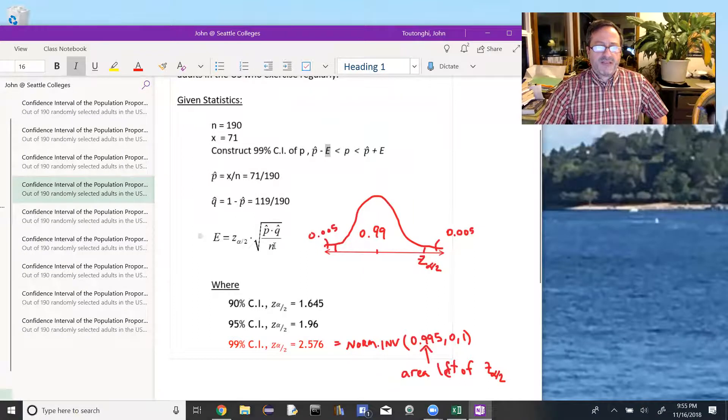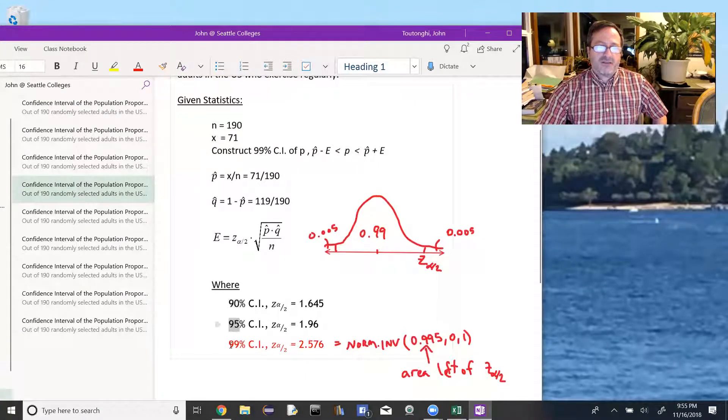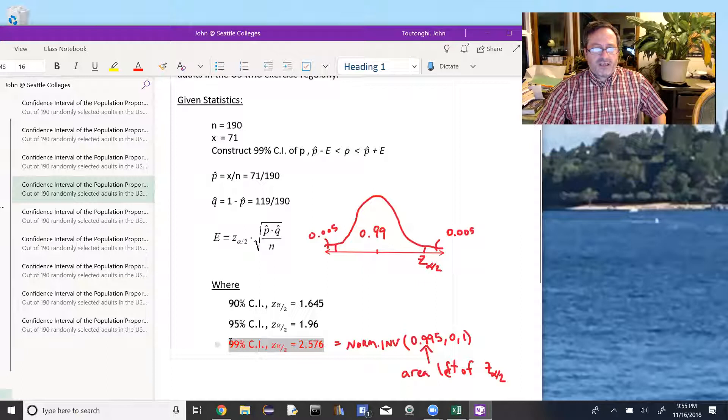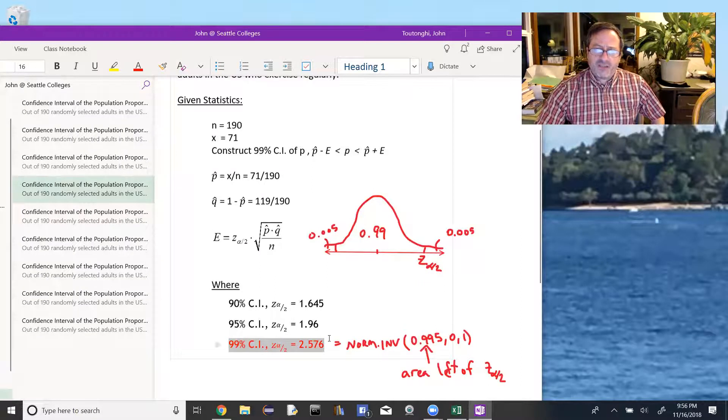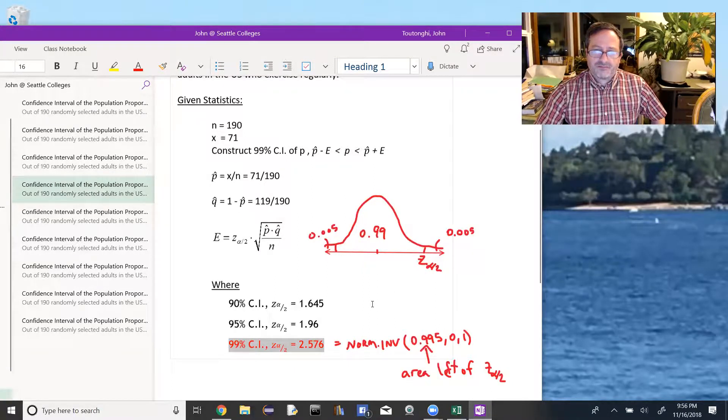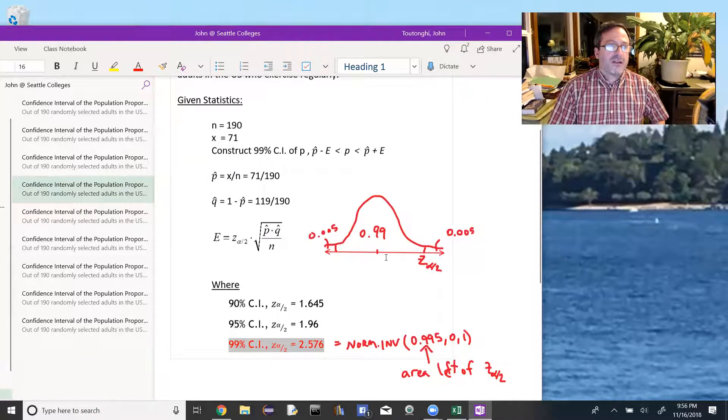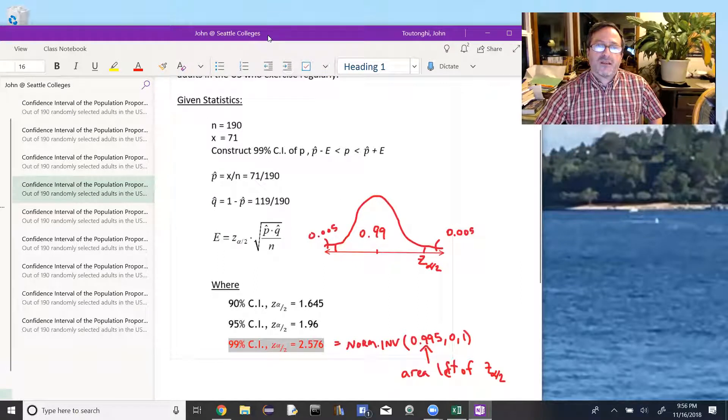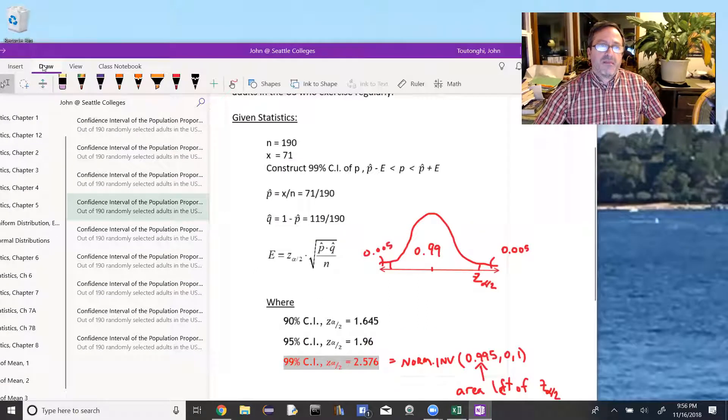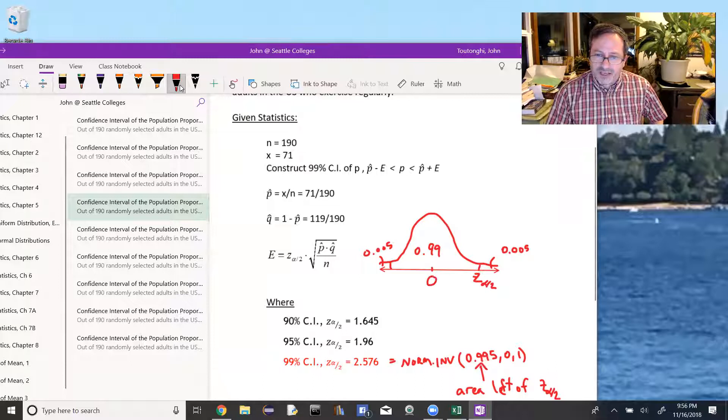If we have a value for the confidence level that is common, so the common values are 90%, 95%, or 99%, then we're going to know what the z-alpha over 2s are. In this case, it's 2.576. If we don't, we could always find the z-alpha over 2 by looking at this picture here, a picture of a standard normal distribution where the mean is 0 and the standard deviation is 1.